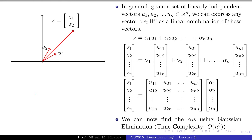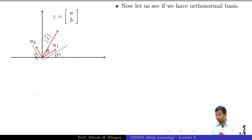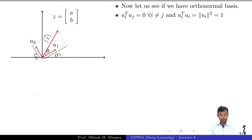Now this was for any basis. I will consider a special basis where instead of n linearly independent vectors, these vectors are also orthogonal. Orthogonal vectors are linearly independent, but the converse is not always true. An orthonormal basis consists of orthonormal vectors: 'ortho' means the vectors are orthogonal, and 'normal' means all the vectors are unit vectors. The condition that holds is: Uᵢᵀ Uⱼ = 0 if i ≠ j, and Uᵢᵀ Uᵢ = 1.